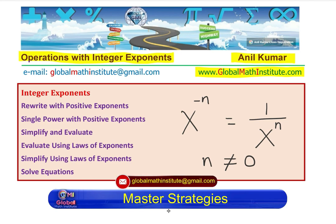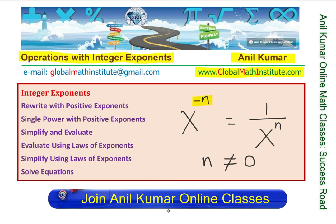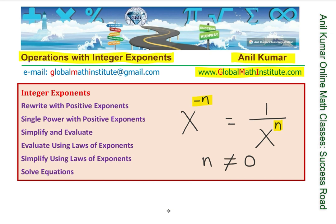When I say integer exponents, the exponent could be positive or negative. So if it is x to the power of minus n, it can be written as a reciprocal 1 over x to the power of n. Writing with n as the power with a positive integer is one of the criteria in which we have to provide the solutions.